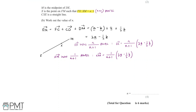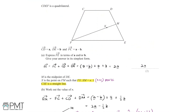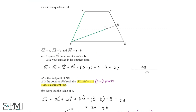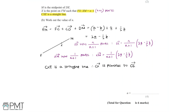Since CXE is a straight line, the vector CX is parallel to the vector CE. To find vector CX, we go from C to F, then F to X. So the vector CX equals CF plus FX. We know FC equals a minus b, so CF equals minus(a minus b). Adding FX, which equals N over (N plus 1) multiplied by (2a minus half b), gives us the expression for CX.